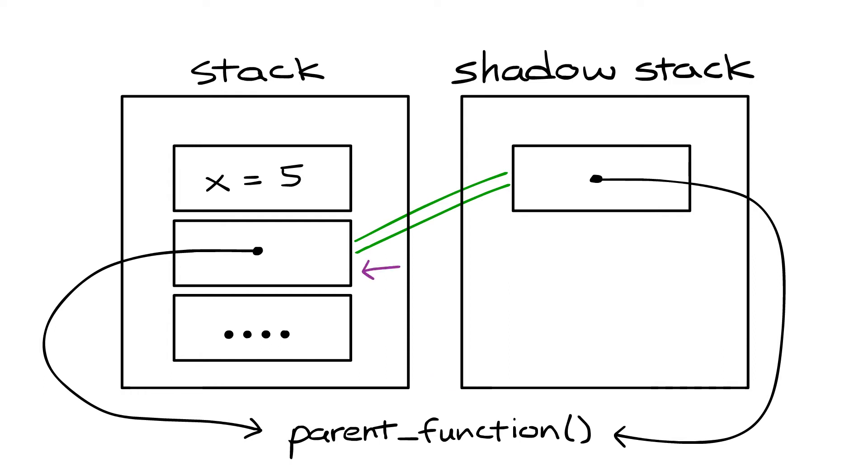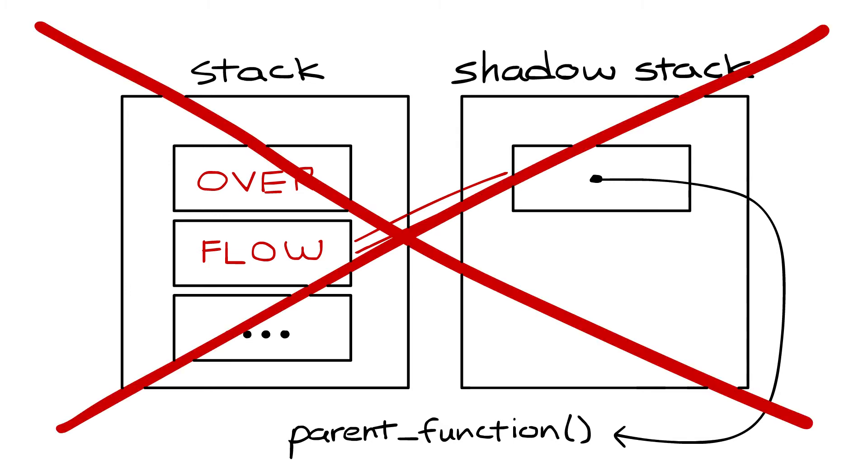In the normal case, the return address on the original stack is going to be equal to the one on the shadow stack, and will proceed with the program normally. However, if a buffer overflow is attempted and the return address is overwritten or changed in any way, then the addresses will not match and the program will crash before any damage is done.